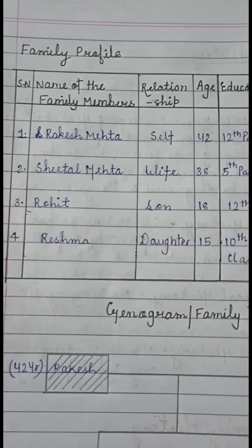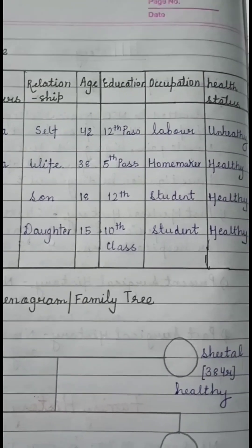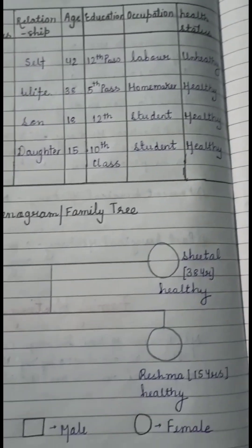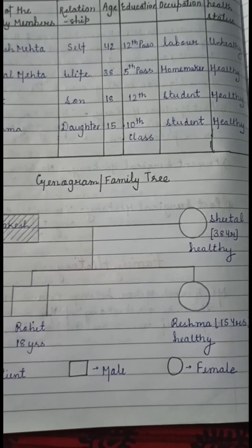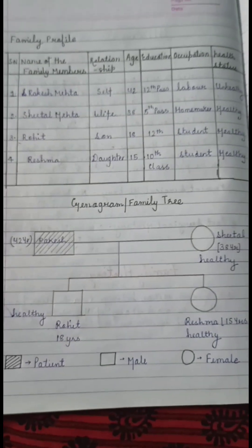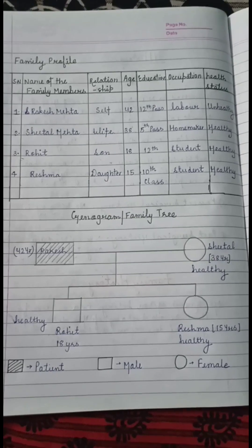Then we create a family profile, which includes the name of the family member, relation, age, education, occupation, and health status, followed by a genogram.